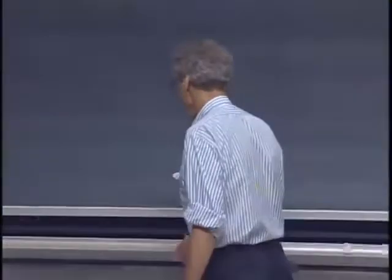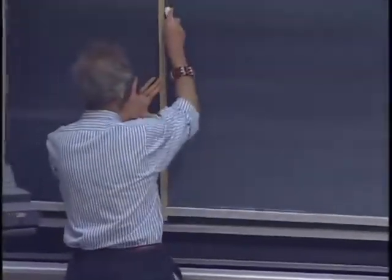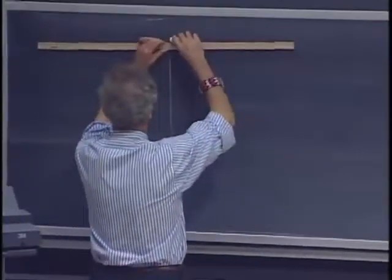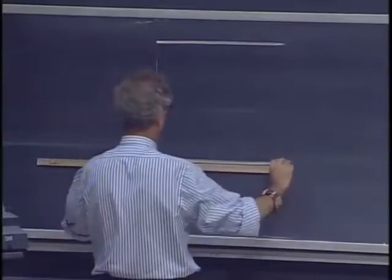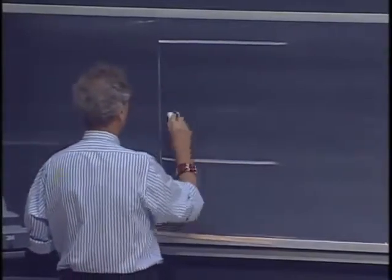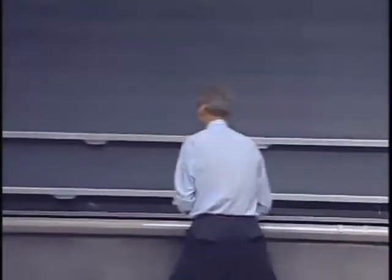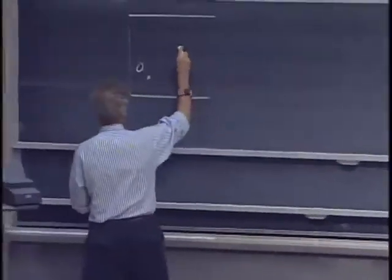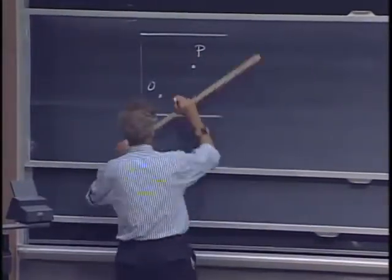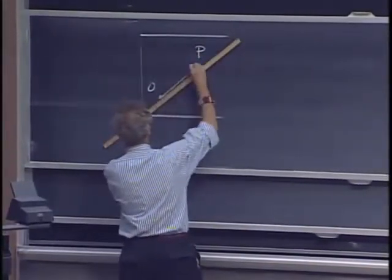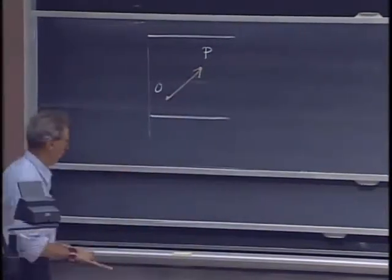Imagine that I'm standing on a table in 26-100. This is the table. And I am standing, say, at point O, and I move along a straight line from O to point P. So I move like so. So that's where I am on the table, and that's where you will see me when you look from 26-100.